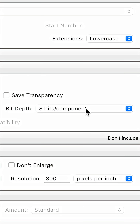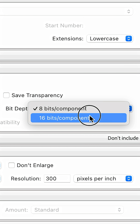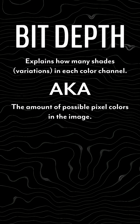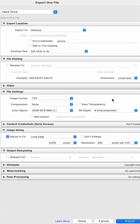So what is bit depth and why does it matter for your photography? Bit depth explains how many shades per channel — in other words, how many different colors there can be in your image.